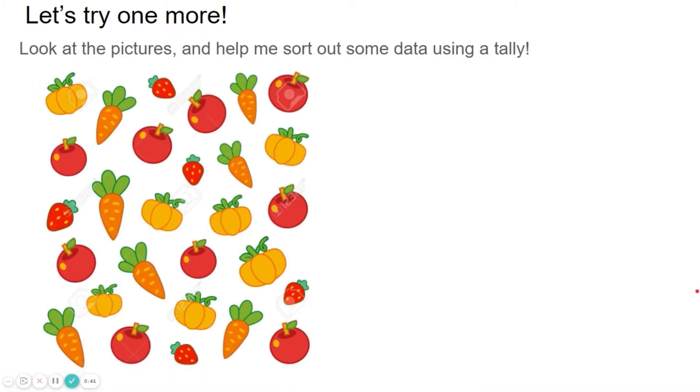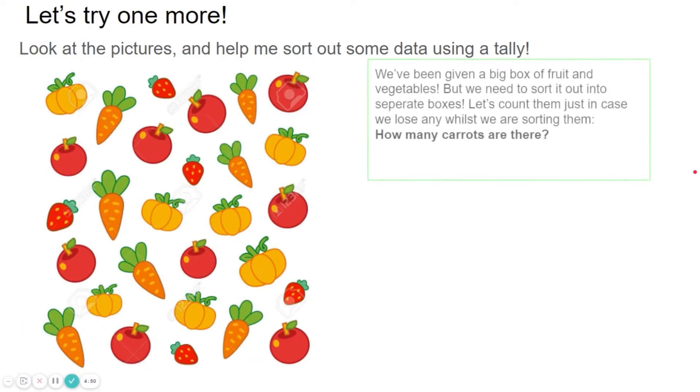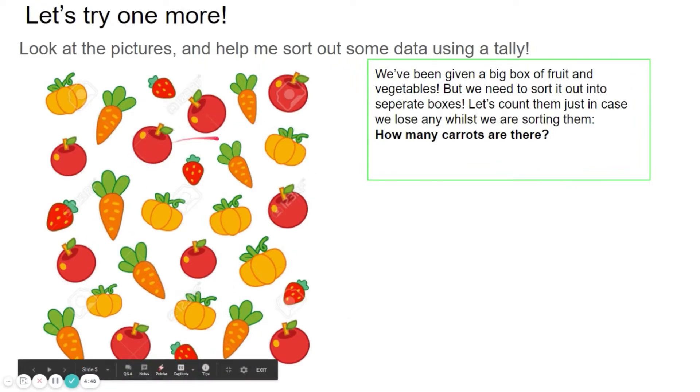Let's try one more. Look at the pictures and help me sort out some data using a tally. We've been given a big box of fruit and veg, lovely, but we need to sort it out into separate boxes. Let's count them just in case we lose any. How many carrots are there? While we count the carrots, we're going to complete a tally to keep track.